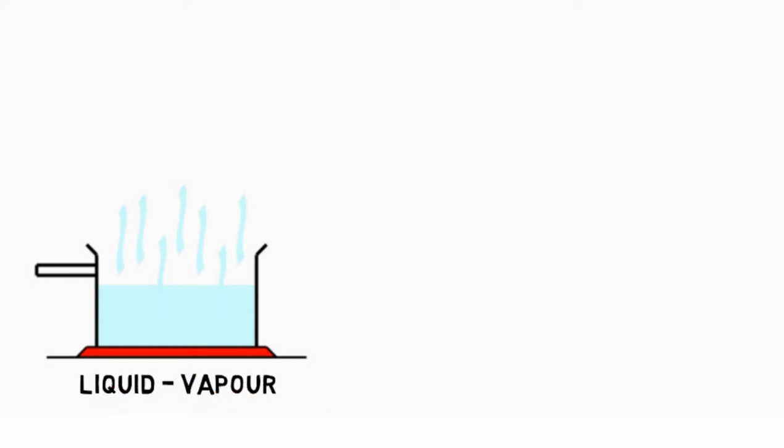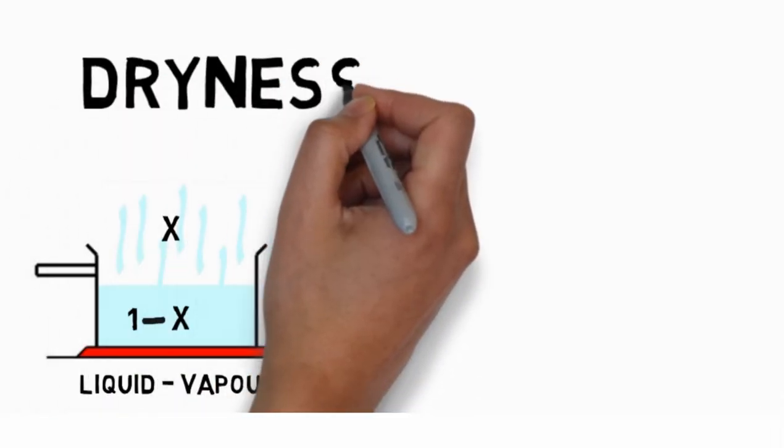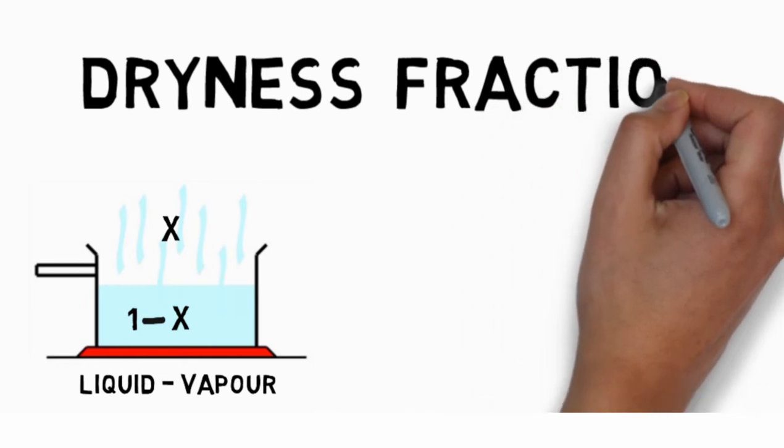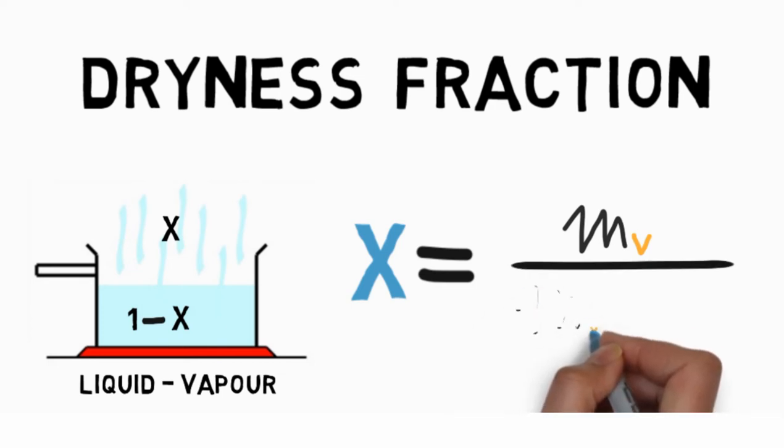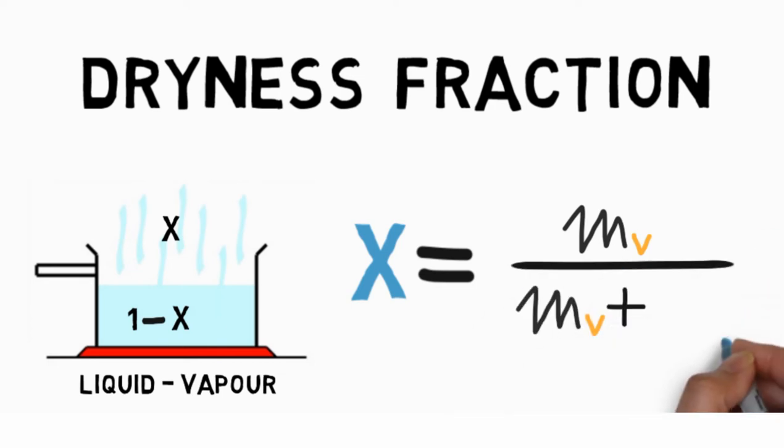Now, in a kilogram liquid vapor mixture, if x kg is the mass of vapor and 1 minus x kg is the mass of liquid, then x is known as the quantity or dryness fraction of the liquid vapor mixture. Mathematically speaking, dryness fraction x equals mass of vapor upon the sum of mass of vapor and the mass of liquid.